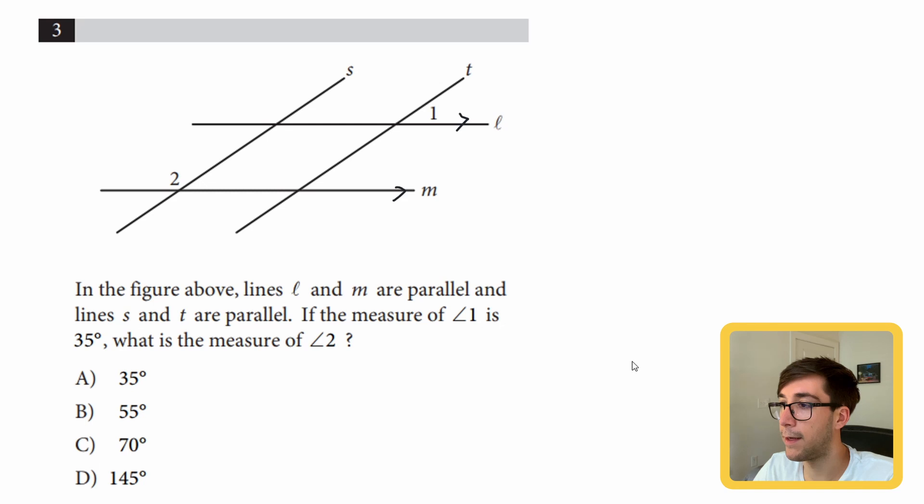So these two are parallel and lines S and T are parallel. If the measure of angle 1 is 35 degrees, what is the measure of angle 2? Angle 2 is down here. So before we do anything, let's think about it.